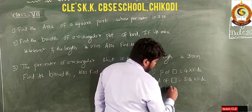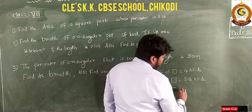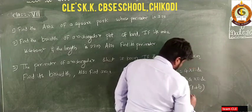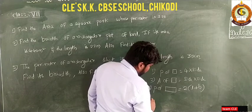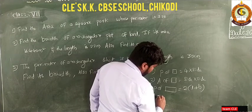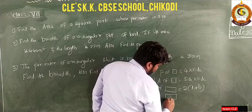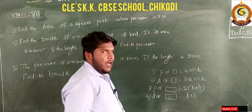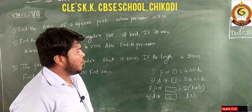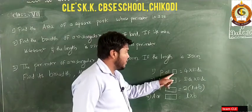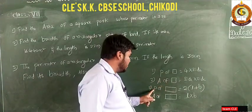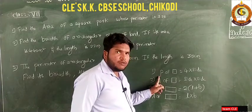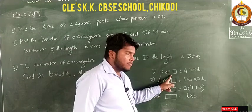The third formula we learned was perimeter of rectangle, which is two into L plus B. The fourth one is area of rectangle, which is length into breadth. In this class, we are going to solve problems on perimeter of square, area of square, perimeter of rectangle, and area of rectangle.